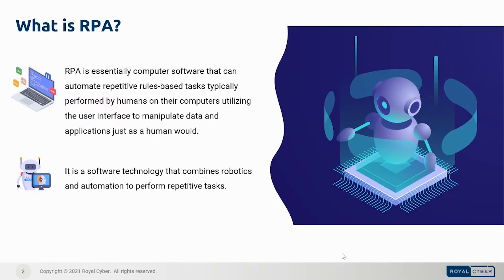What is RPA? Robotic Process Automation is an application of technology governed by business logic and structured inputs, aimed at automating business processes. Using RPA tools, a company can configure software or a robot to capture and interpret applications for processing a transaction, manipulating data, triggering responses, and communicating with other digital systems. RPA scenarios range from generating an automatic response to an email to deploying thousands of bots, each programmed to automate jobs in an ERP system.